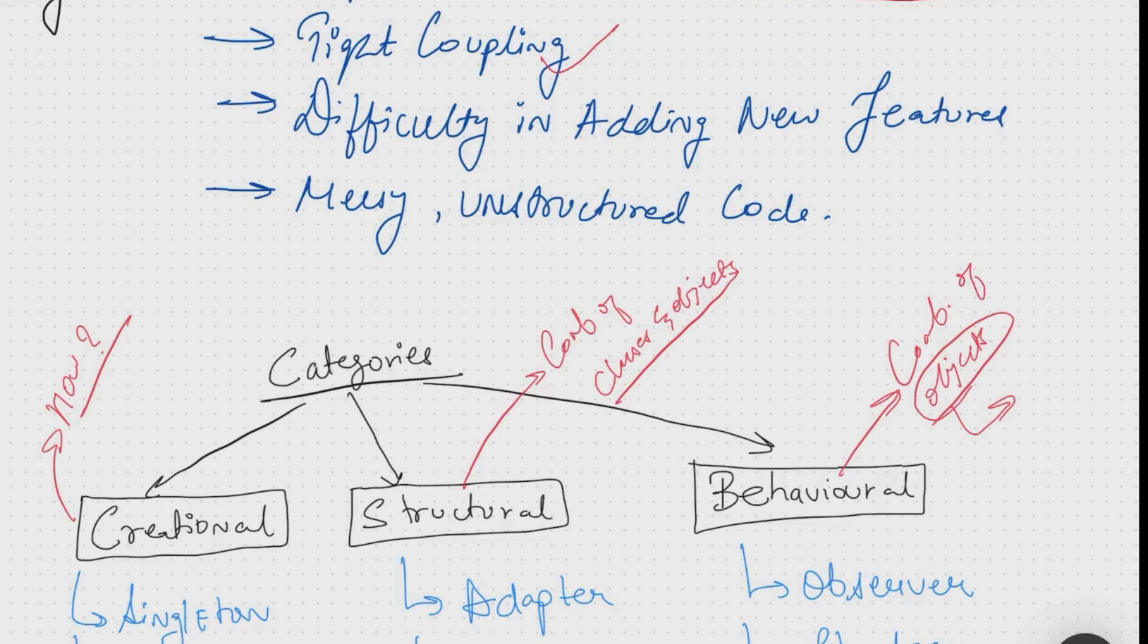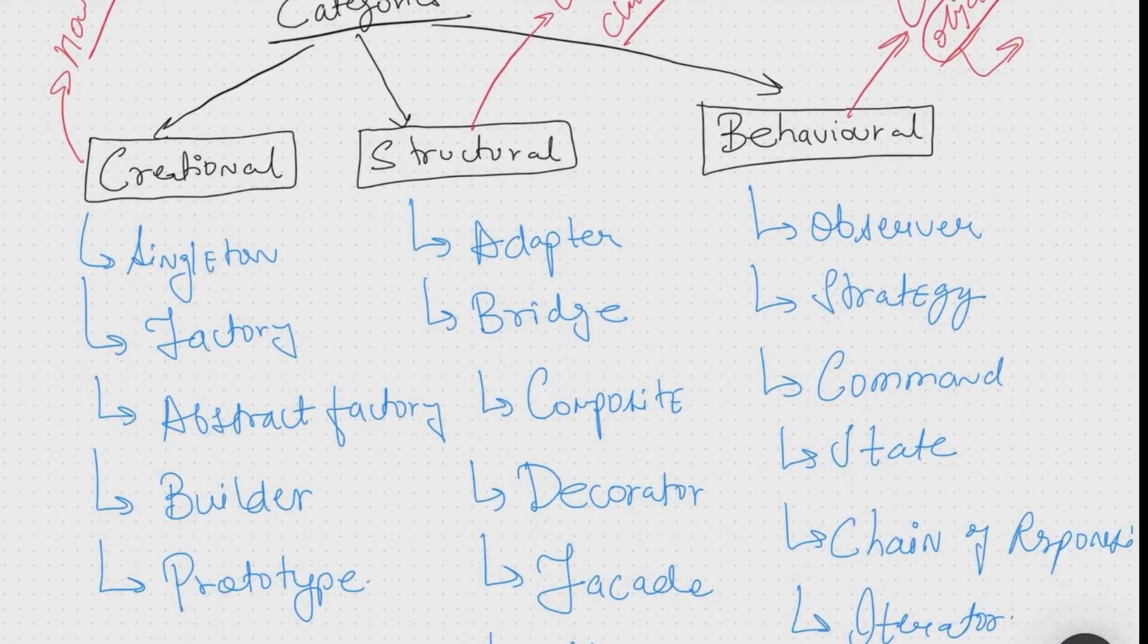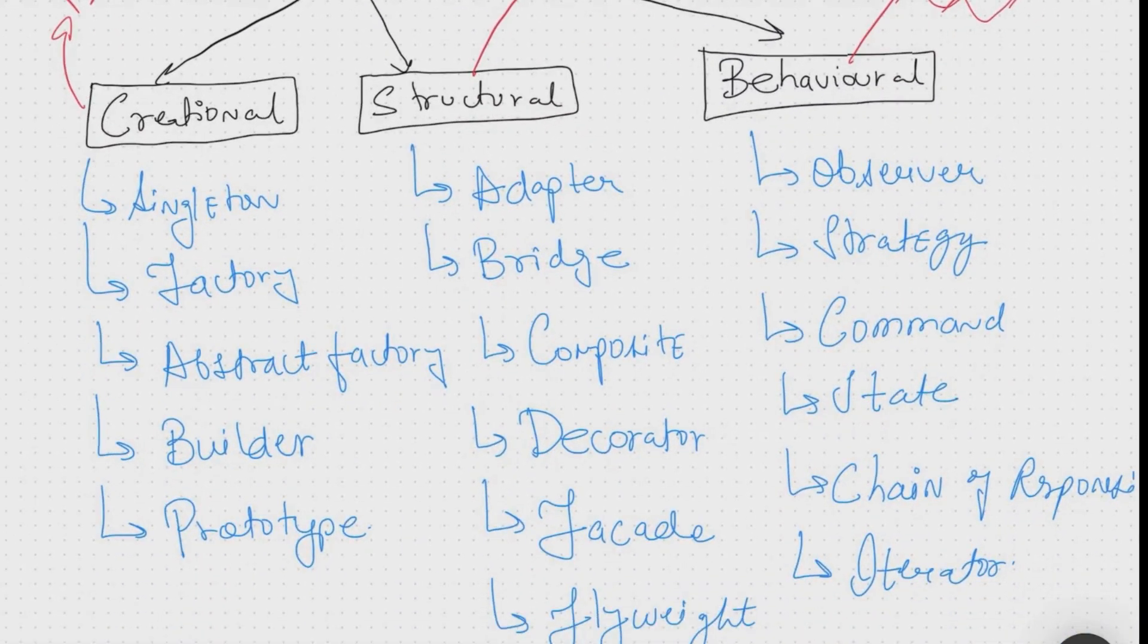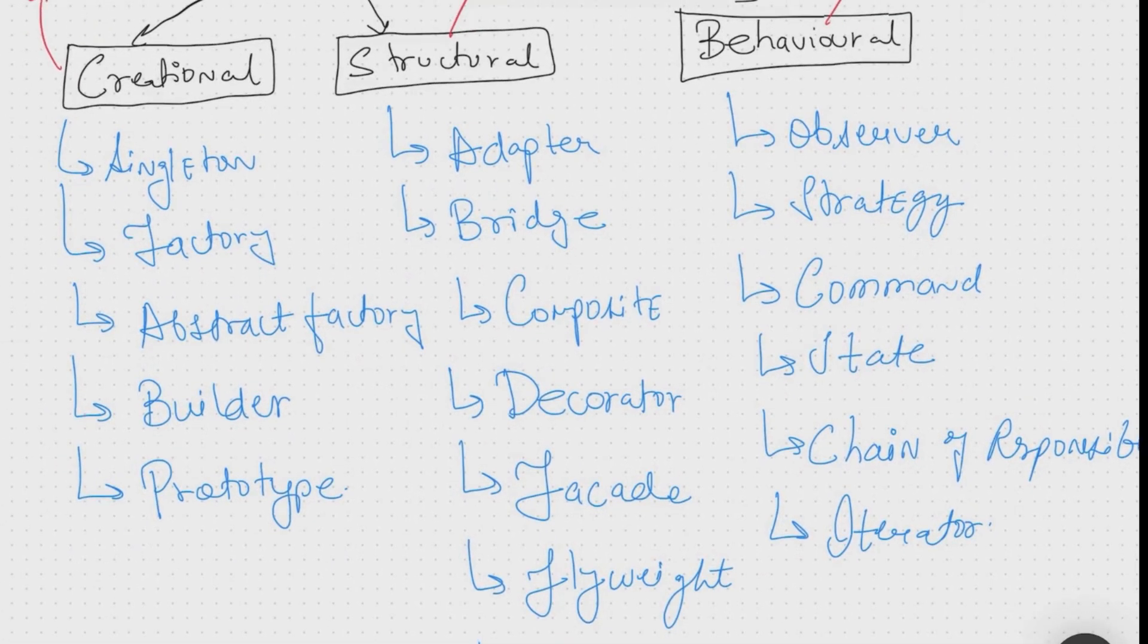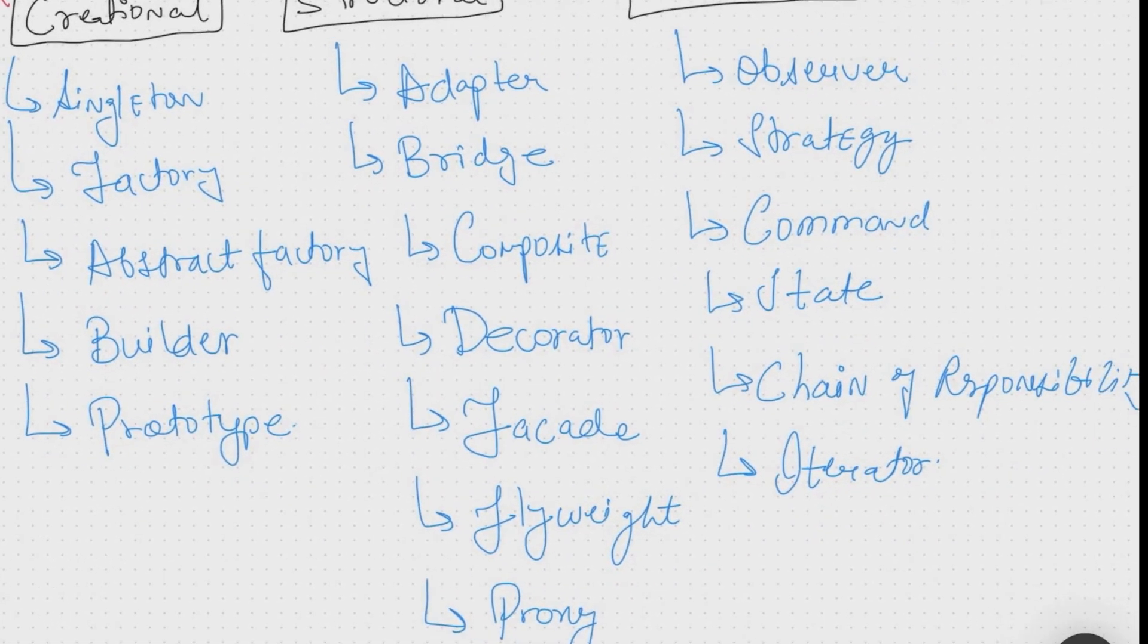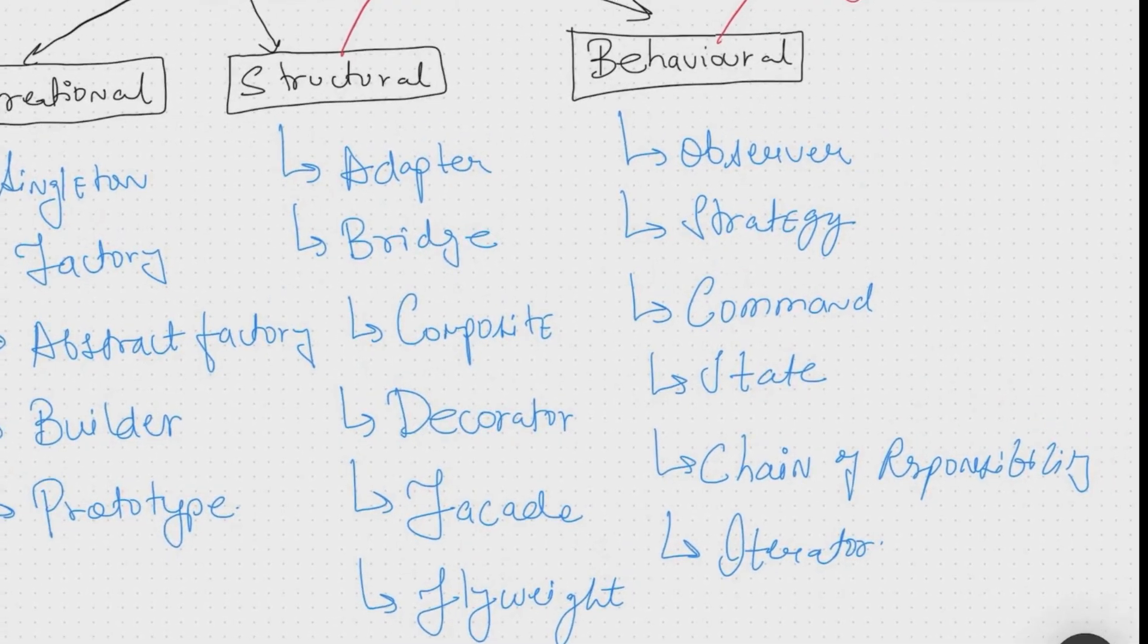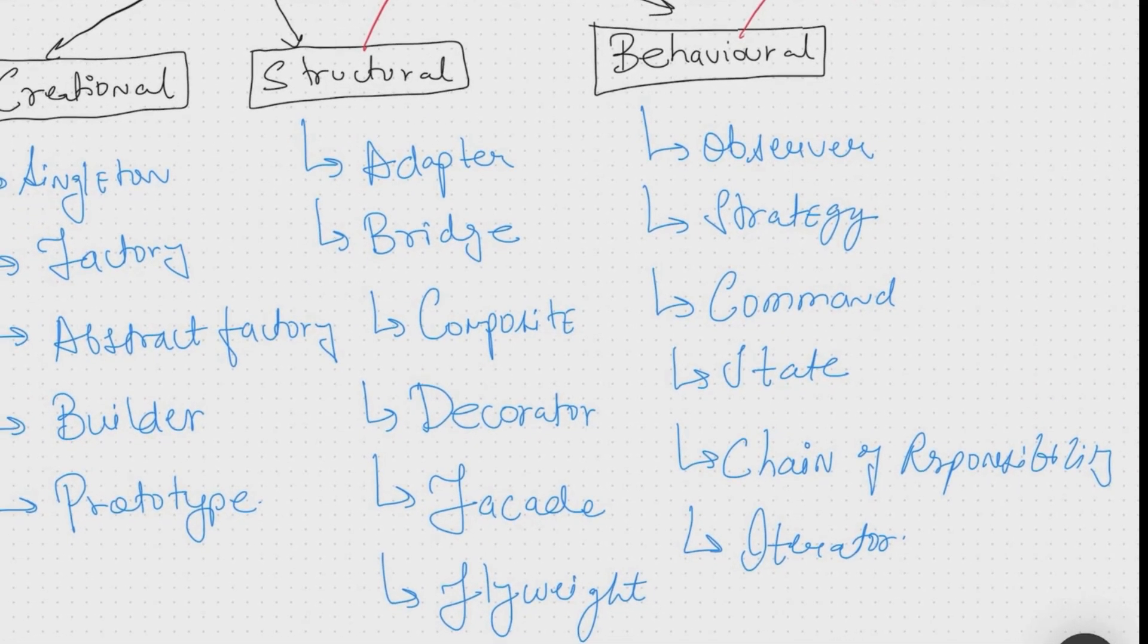These are the basic definitions of all design pattern categories. We'll move forward to check them one by one. In creational, we have singleton, factory, abstract factory, builder, and prototype. In structural, we'll learn about adapter, bridge, composite, decorator, facade, flyweight, and proxy. In behavioral, we'll cover observer, strategy, command, state, chain of responsibility, and iterator design patterns.